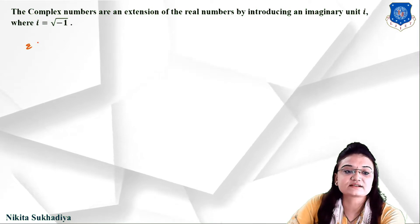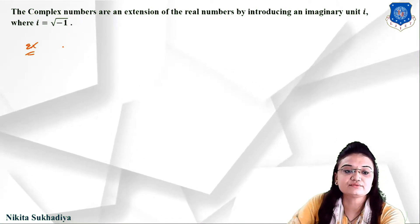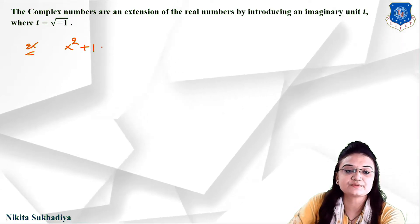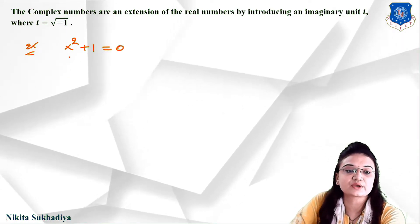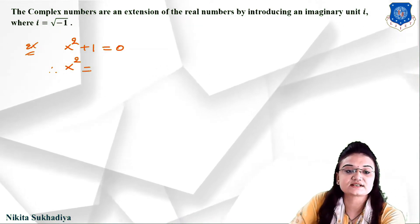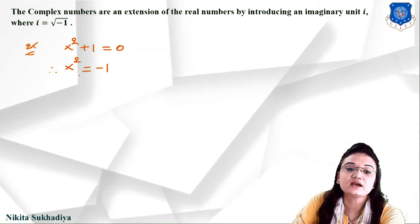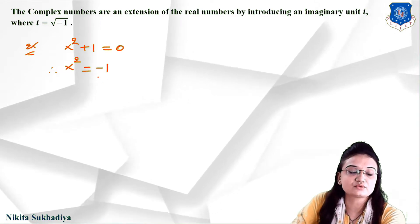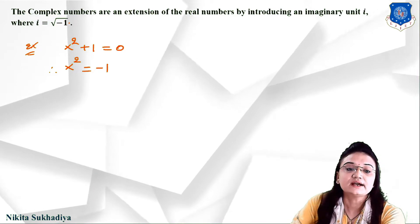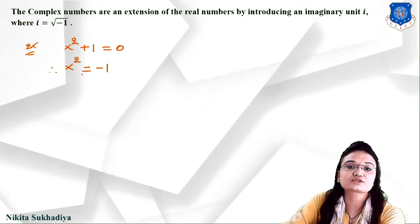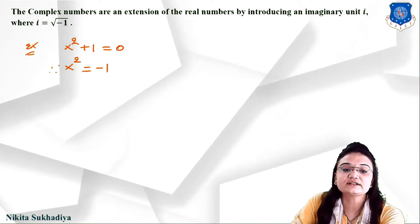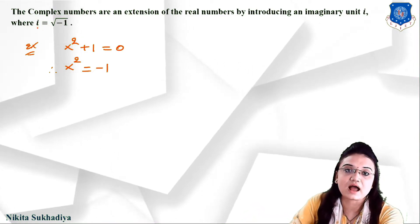So why do we need complex numbers? For example, consider the equation x squared plus 1 equals 0. The next step gives us x squared equals minus 1. We cannot find the square root of any negative number — it is not possible. So at that point we must introduce the imaginary number i.